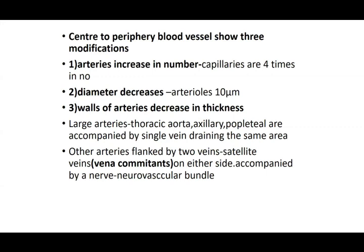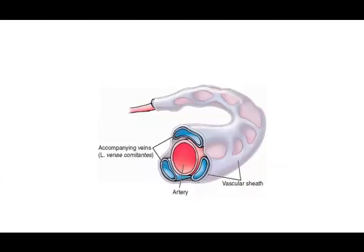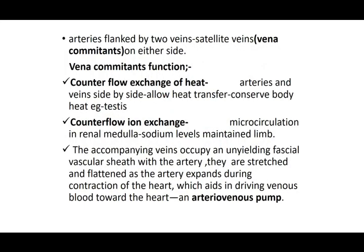Veins that travel alongside arteries are called vena comitants — one artery with two veins on either side. These, together with nerves traveling with the arteries, form the neurovascular bundle. The arteries are flanked by two satellite veins called vena comitants, and they function in counter-current heat exchange — the temperature of blood is exchanged between arteries and veins — and ion exchange as well.